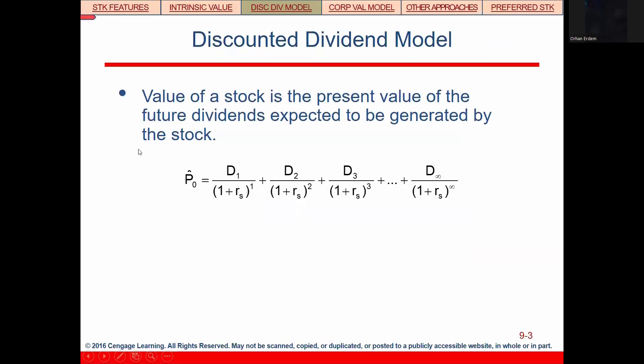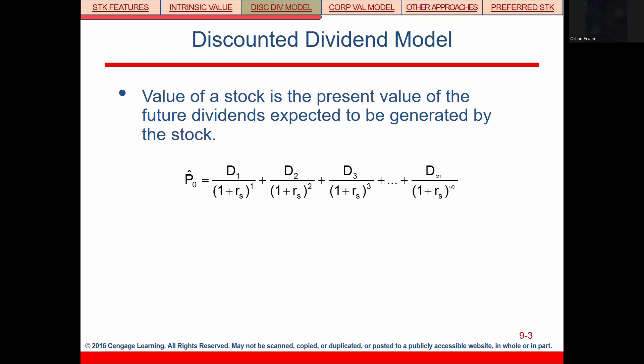The discounted dividend model is based on the idea that the value of any stock is the present value of all future dividends expected to be generated by the stock. We discount every single future cash flow to find the price or value of the financial instrument. The formula discounts the first dividend by (1+R)^1, the second by (1+R)^2, the third by (1+R)^3, and so on to infinity. We use an Excel sheet to calculate these present values.